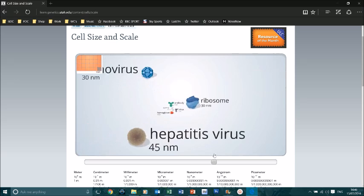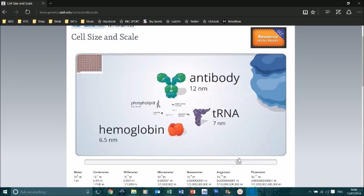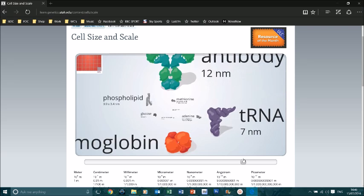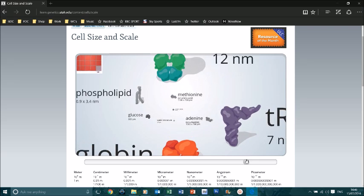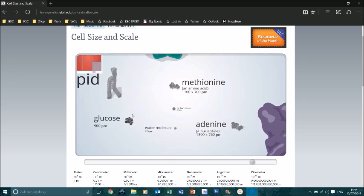You keep going, you keep going down to antibodies, hemoglobin, tRNA. And you can start to see, as we get down here, which is in the picometre scale, we start to get to some of our covalent compounds.